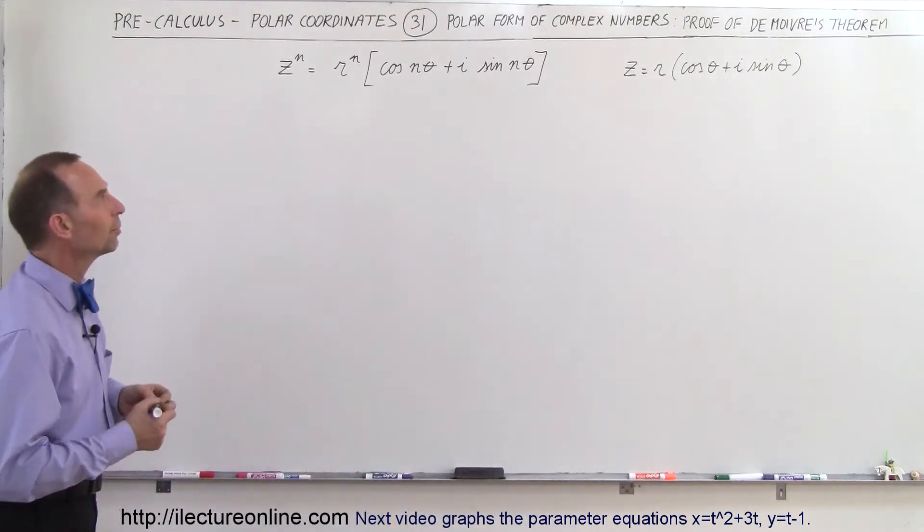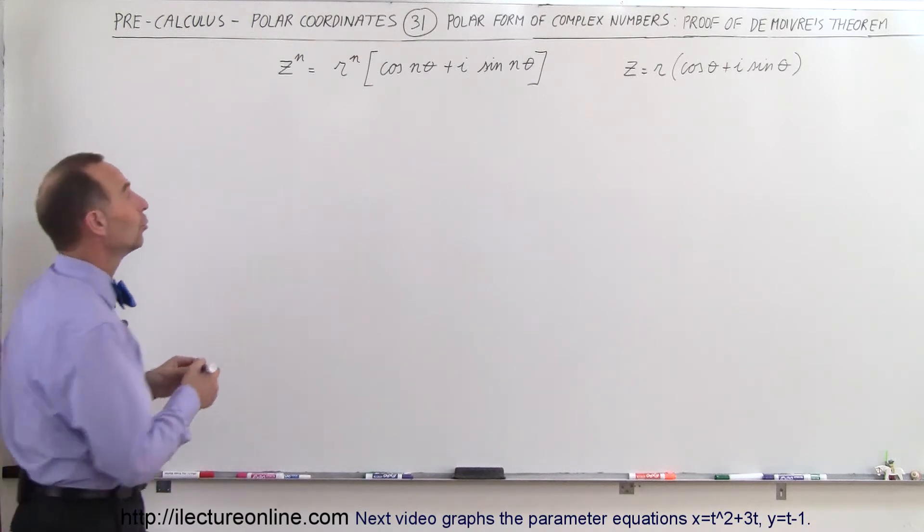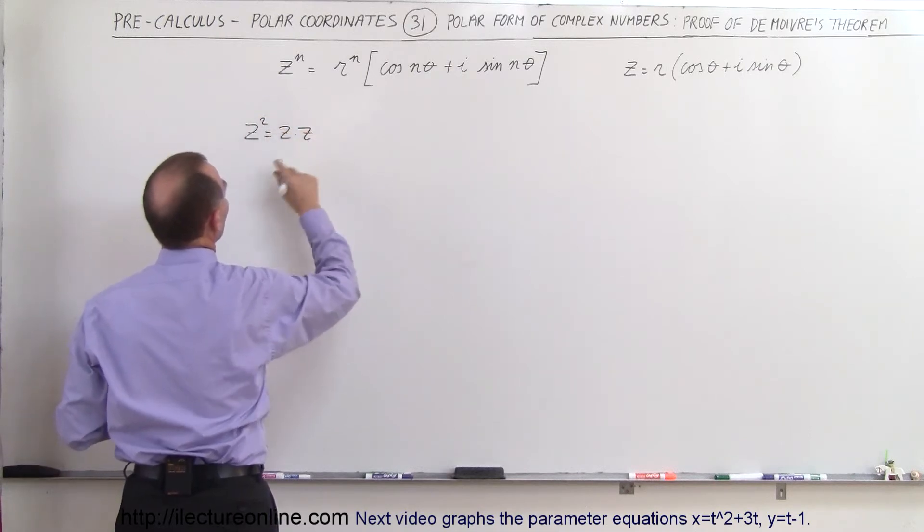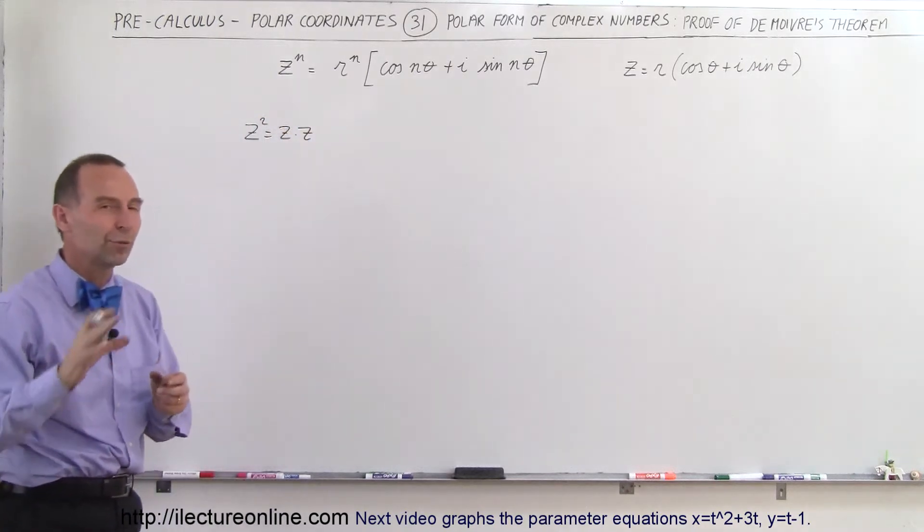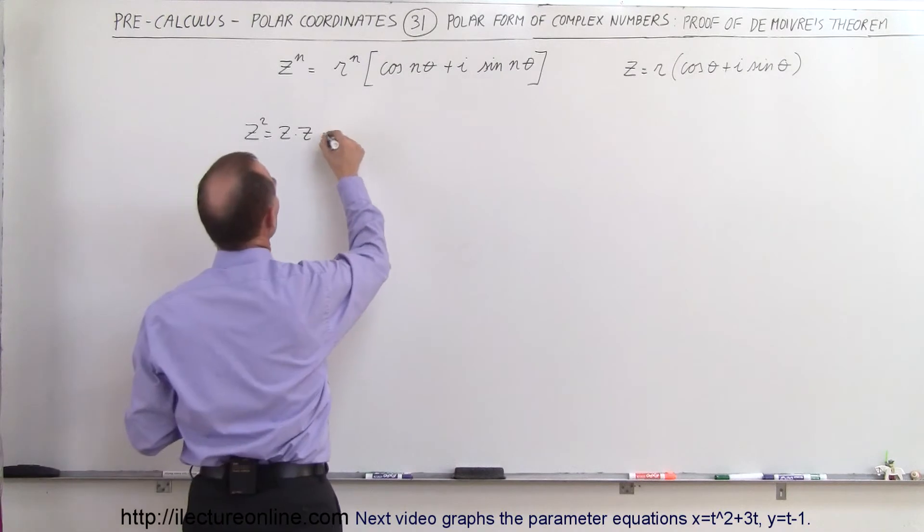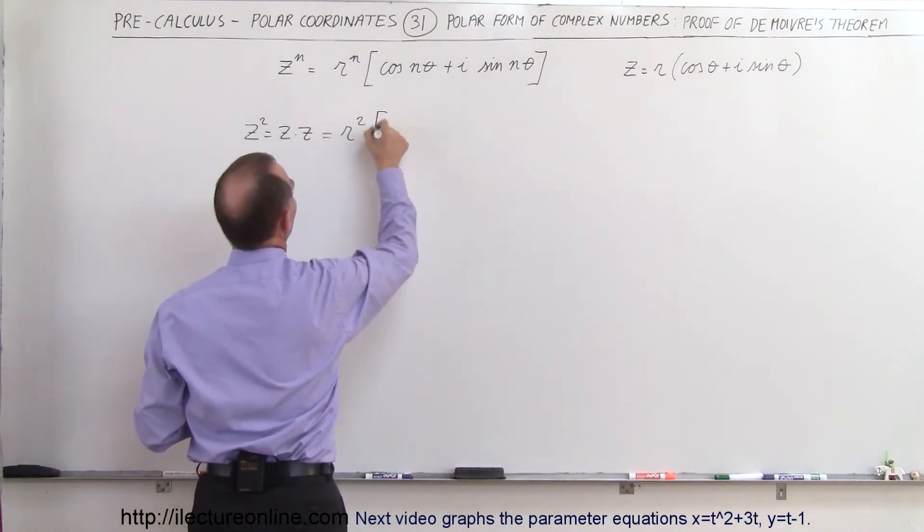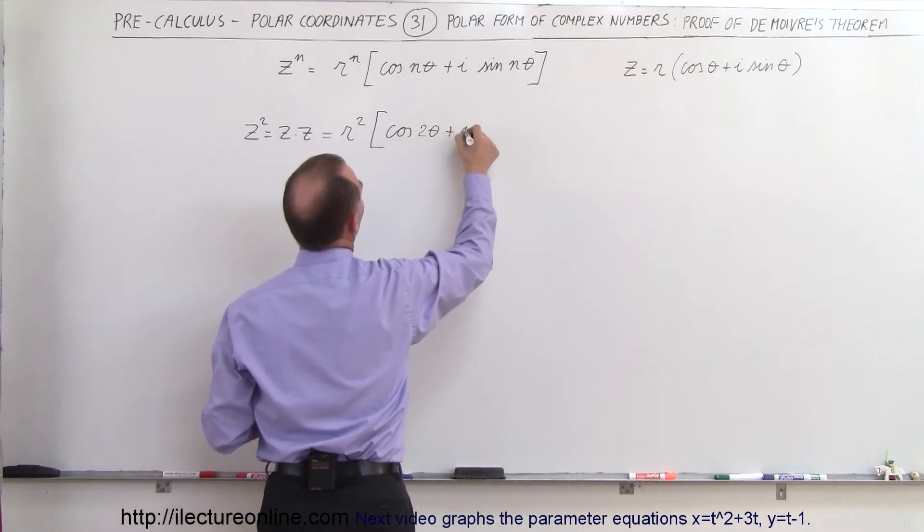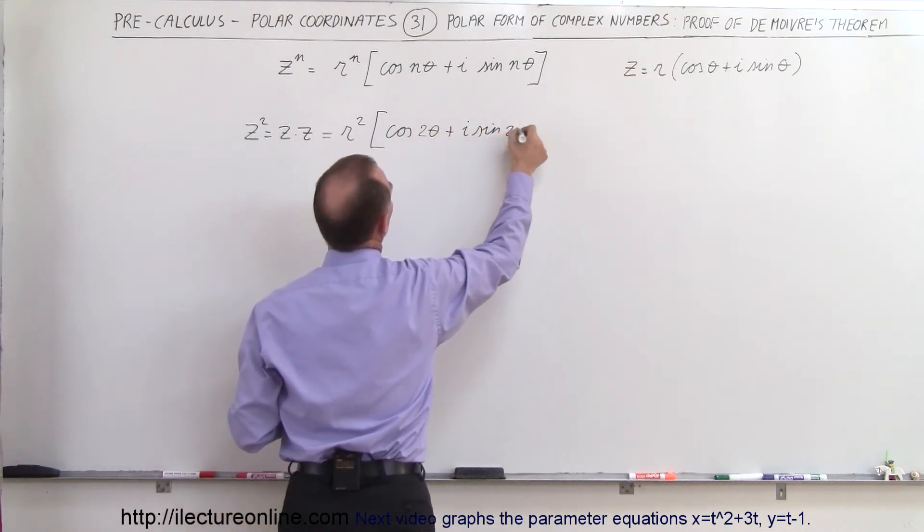So what we should be able to do is first multiply two of these together. If we have z squared, which equals z times z, we can use the theorem we proved before. This would be equal to r squared times cosine of 2 theta plus i times sine of 2 theta.